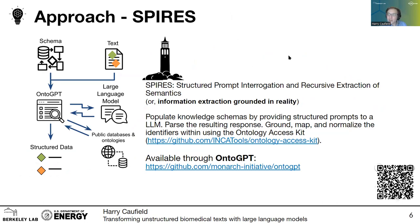To counter some of these issues, we developed this method called SPIRES — Structured Prompt Interrogation and Recursive Extraction of Semantics — which is information extraction grounded in reality. In SPIRES, you start with text that you want to extract information from and couple it with a knowledge schema, which can include complex nested subclasses with links to external identifiers. You pass both as part of a structured prompt to a large language model like GPT-3 or 4, parse the resulting response, and ground, map, and normalize it using the Ontology Access Kit, which is publicly available. Then you get structured data out the other end.